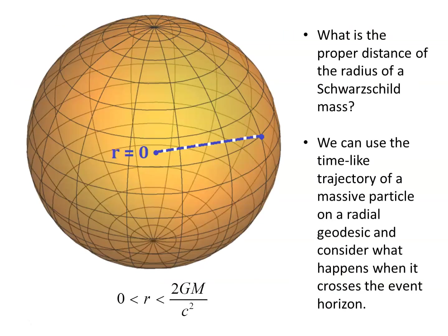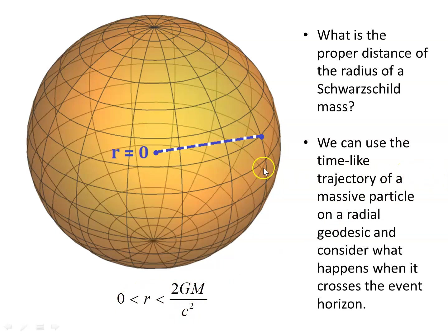The subscriber's question is: what is the proper distance of the radius of a Schwarzschild mass? We're looking at the Schwarzschild black hole and want to know the proper distance from any point on the event horizon, in the radial direction, down to the singularity at r = 0. That region is what we want to examine — so how can we do that?